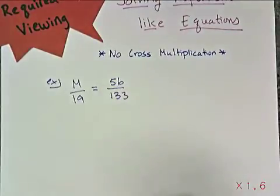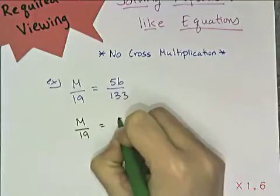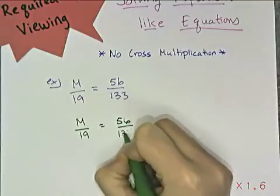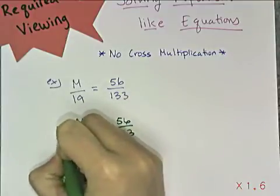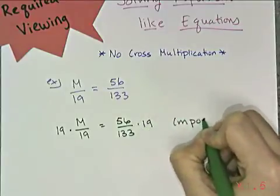So when I solve this, I need to think, well, what has been done to the unknown? And the unknown has been divided by 19. So that means my job is to multiply both sides by 19 using the multiplication property of equality.